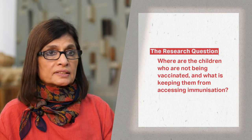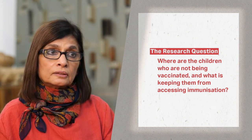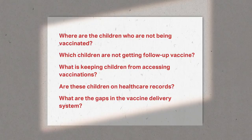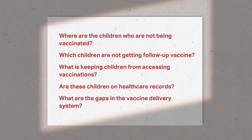Thus, they were able to go beyond the brief they had been handed and articulate a nuanced research question. The research question they came up with was: 'Where are the missing children?' — which translated into: 'Where are the children who are not being vaccinated?' This question was broken down into a set of sub-questions, and by exploring these, the team was able to understand the causes and factors — the whys and the hows — of low vaccination rates in the state.